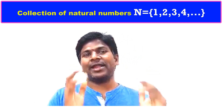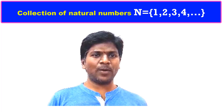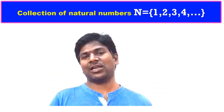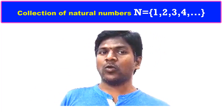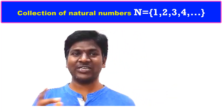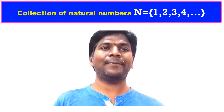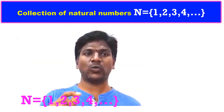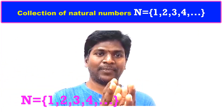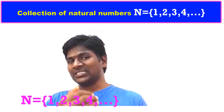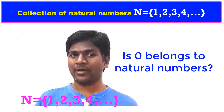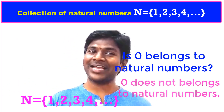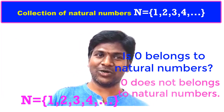Now one more example: the group of natural numbers — is it only a group or also a set? Let us test. First condition: all objects should have a common property. The natural numbers are 1, 2, 3, 4, 5, 6... they all have the common property of being natural numbers — first condition satisfied. Second condition: can we determine whether a given object is in the collection or not? Suppose I say zero — is zero in the group of natural numbers?